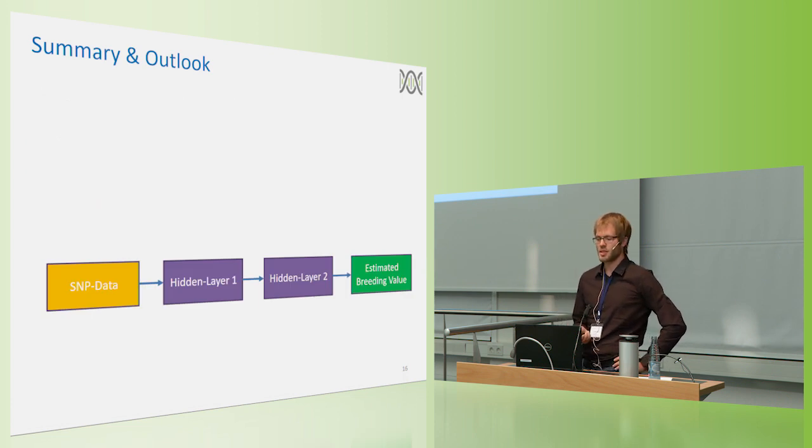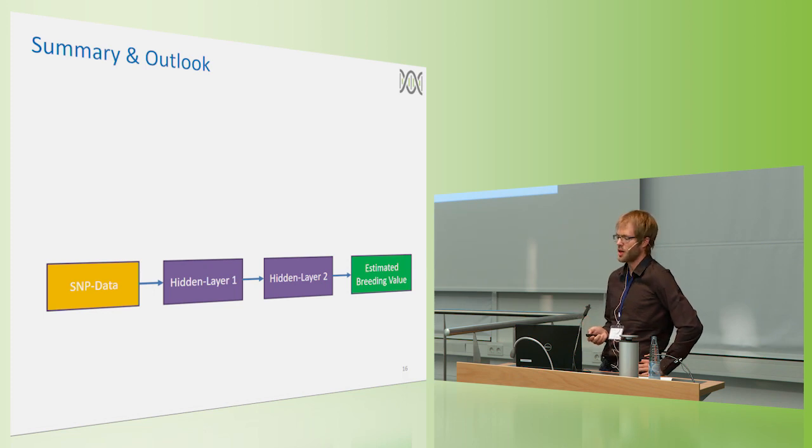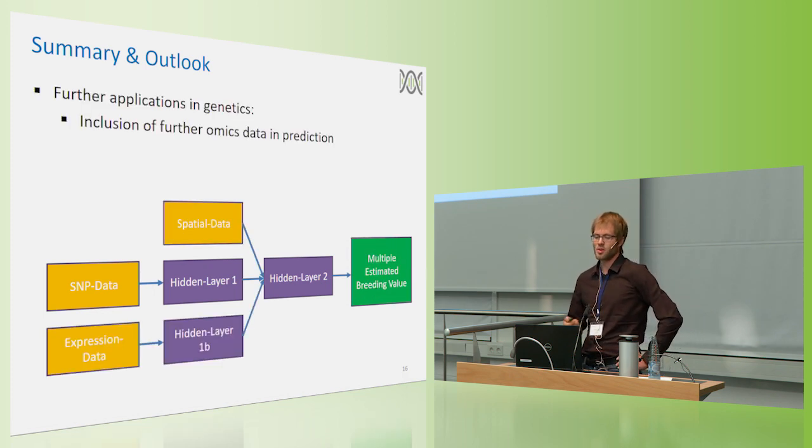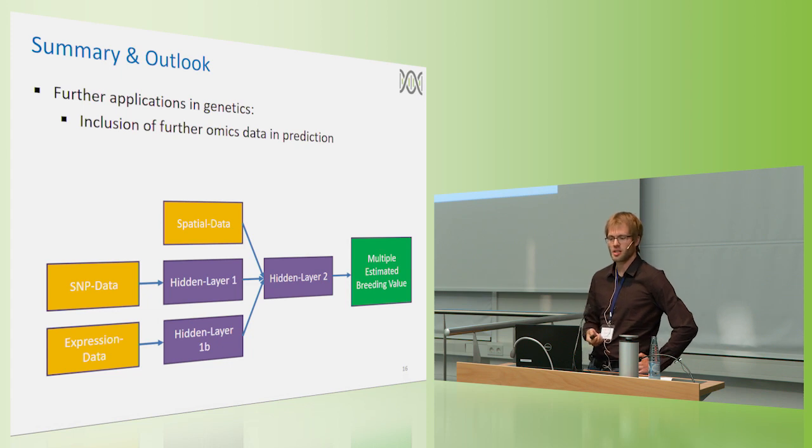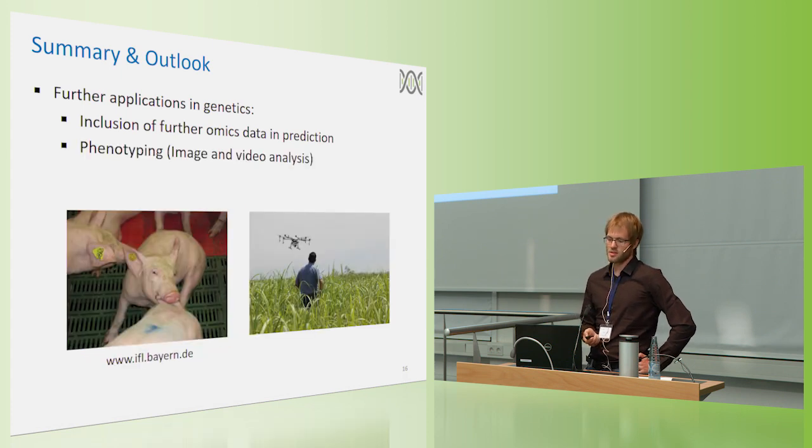And as a general statement of what could be possible applications in genetics, so far I've shown this quite simple model with SNP data as an input and some breeding values we want to output. What really is promising in deep learning is that it's quite easy to include additional input and output layers. For example, include expression data or spatial data in our method and do predictions for multiple breeding values at a time.